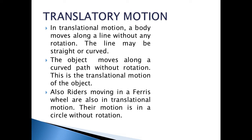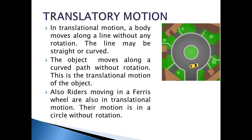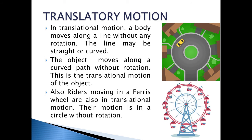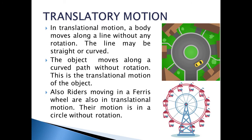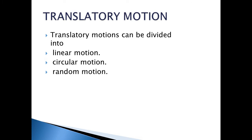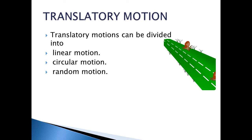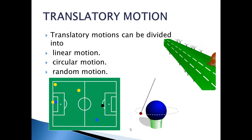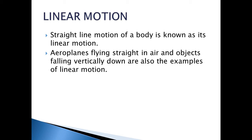Translatory motion: in translational motion, a body moves along a line without any rotation. The line may be straight or curved. The object moves along a curved path without rotation. Riders on a Ferris wheel are also in translational motion — their motion is in a circle without rotation. Translatory motion can be divided into linear motion, circular motion, and random motion.